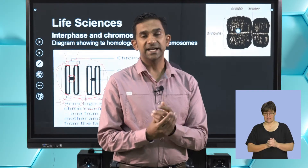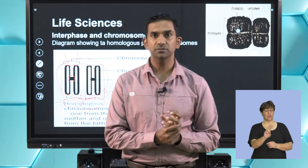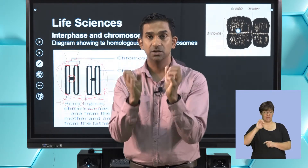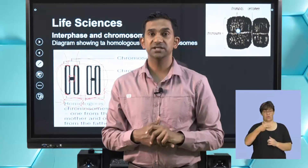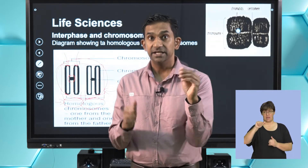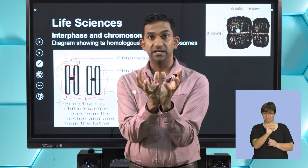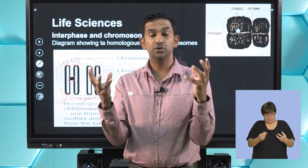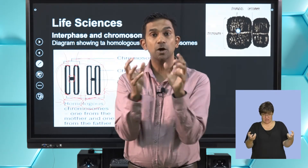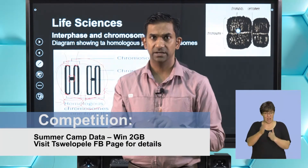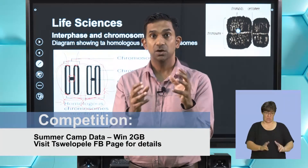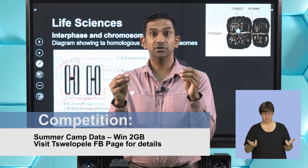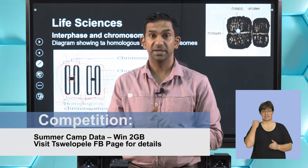We've looked at the structure of a chromosome and identified that it is made up of chromatids held together by the centromere. This is essentially the arrangement of DNA in readiness for cell division. It's important that chromatin is arranged in a compact, systematic way so that when the nuclear material divides, it can do so in a systematic and organized method.